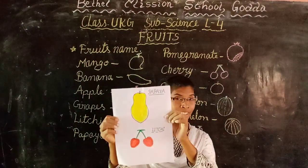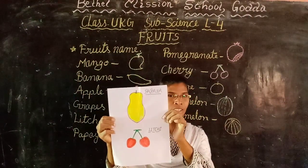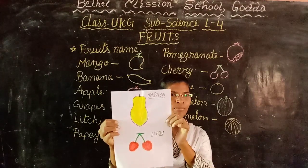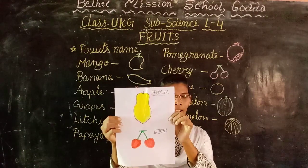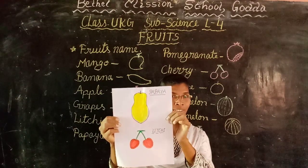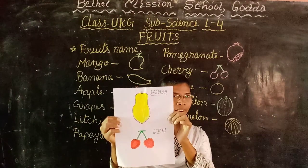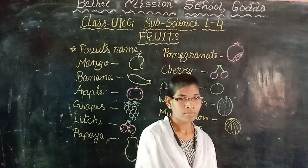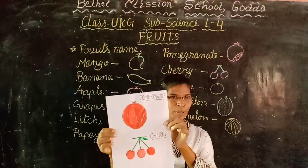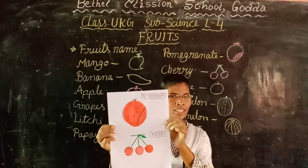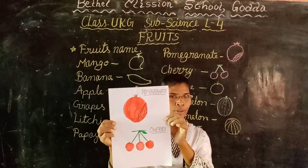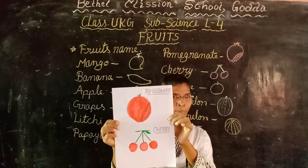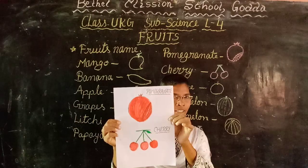Next one. In this also there are two fruits — papaya and litchi. Next picture. In this picture there are two fruits — pomegranate and cherry.